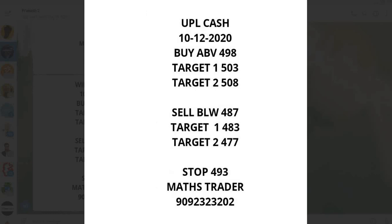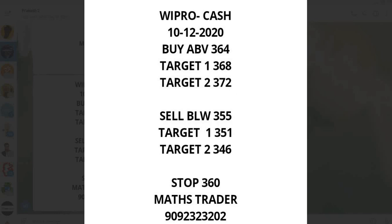UPL: Buy above 498, targets 503 and 508. Sell below 487, targets 483 and 477. Stop loss 493. Wipro: Buy above 364, targets 368 and 372. Sell below 355, targets 351 and 346. Stop loss 360. These are cash levels.